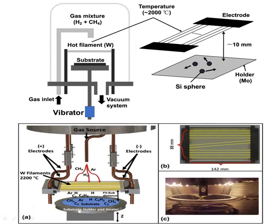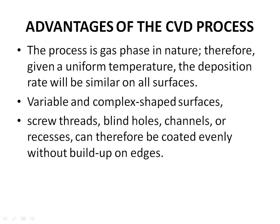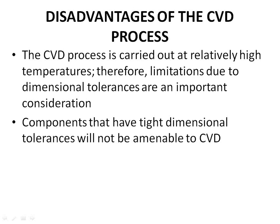The first figure illustrates the working of hot filament CVD (HFCVD). The second image shows the low temperature hot filament chemical vapor deposition of ultra nanocrystalline diamond films. Advantages of the CVD process: the process is gas phase in nature, therefore given a uniform temperature, the deposition rate will be similar on all surfaces. Variable and complex shaped surfaces — screw threads, blind holes, channels, or recesses — can therefore be coated evenly without buildup on edges. Disadvantages: the CVD process is carried out at relatively high temperatures, so limitations due to dimensional tolerances are an important consideration. Components with tight dimensional tolerances will not be amenable to CVD.